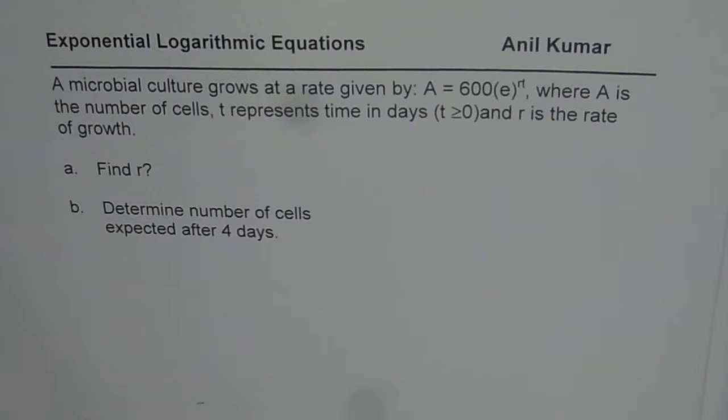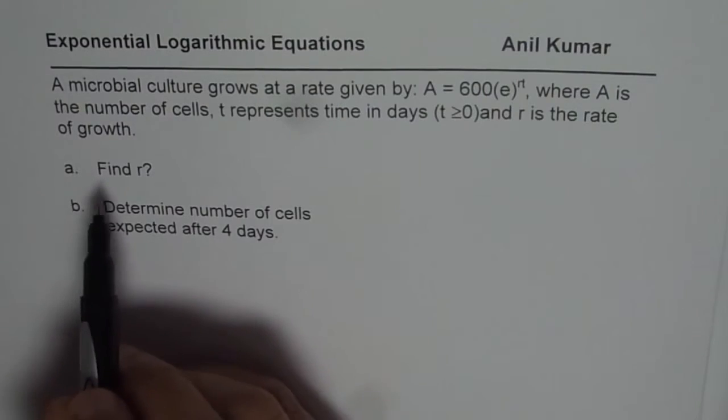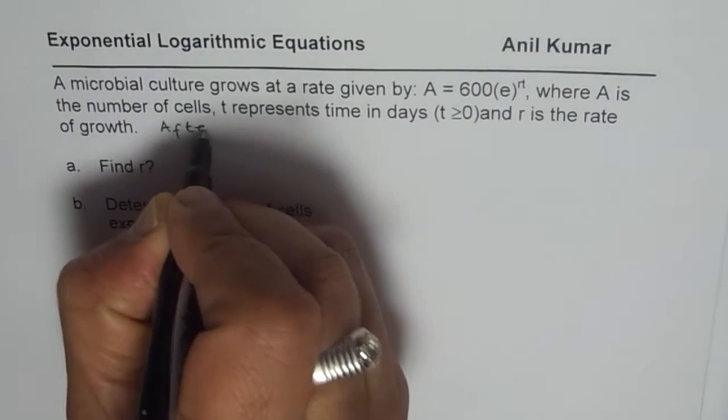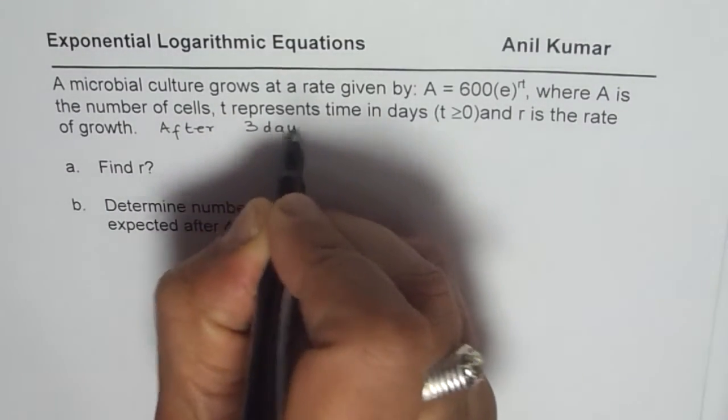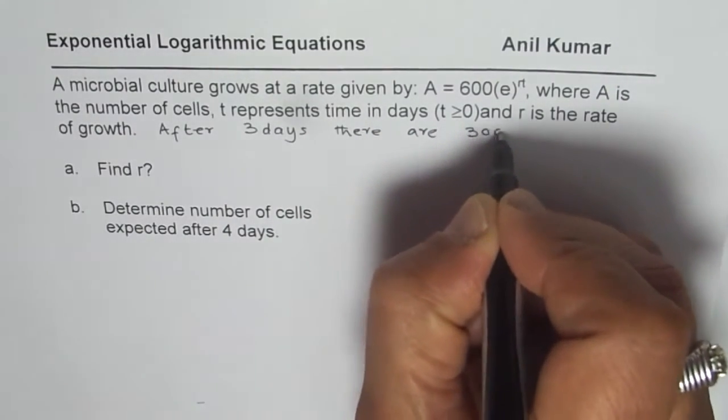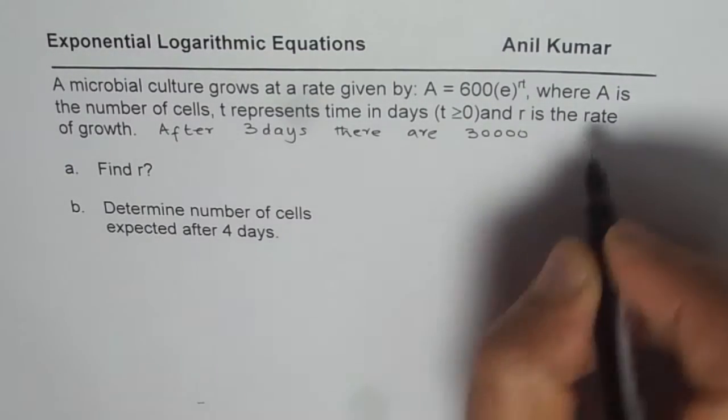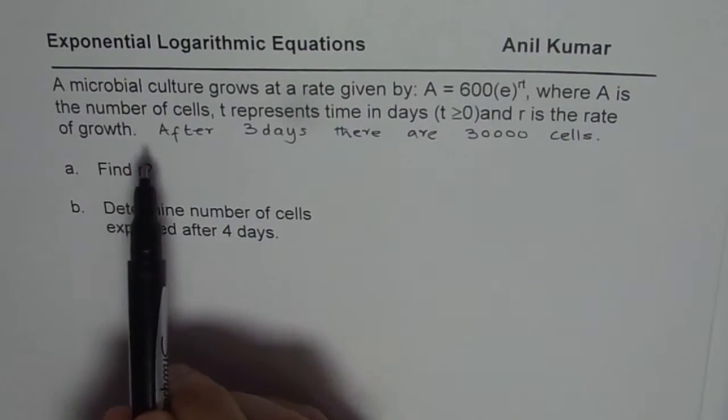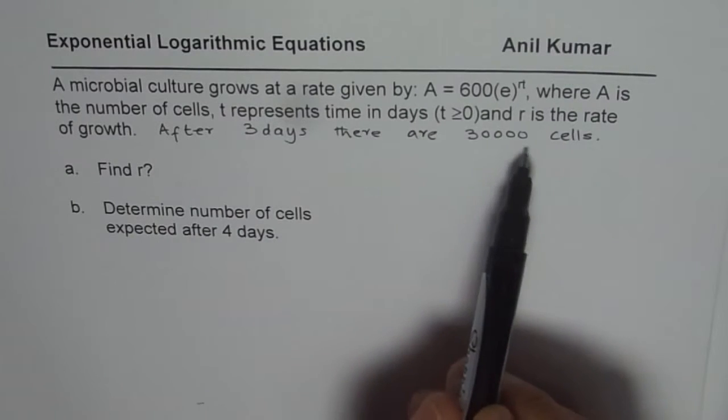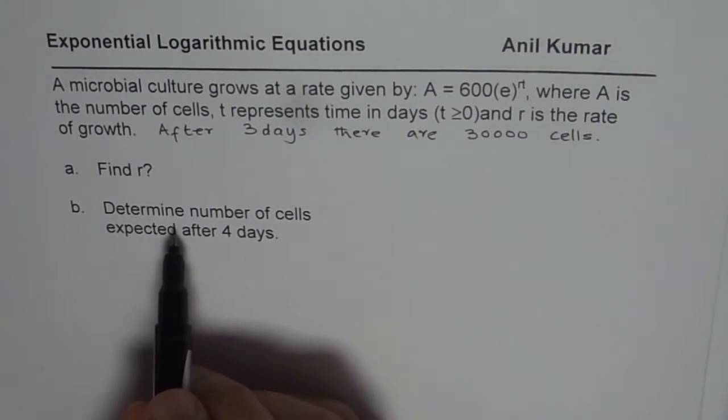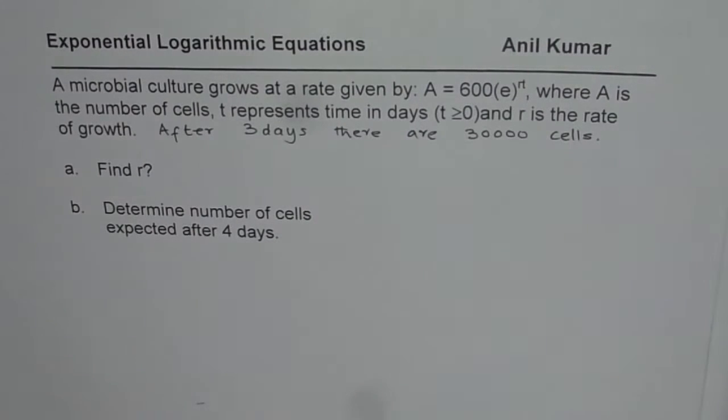You need to find the rate of growth. So let's assume that after three days there are 30,000 cells. Let's change the question a bit—say after three days there are 30,000 cells, find r the growth rate. So that was missing from the question. Part b is determine number of cells after four days.